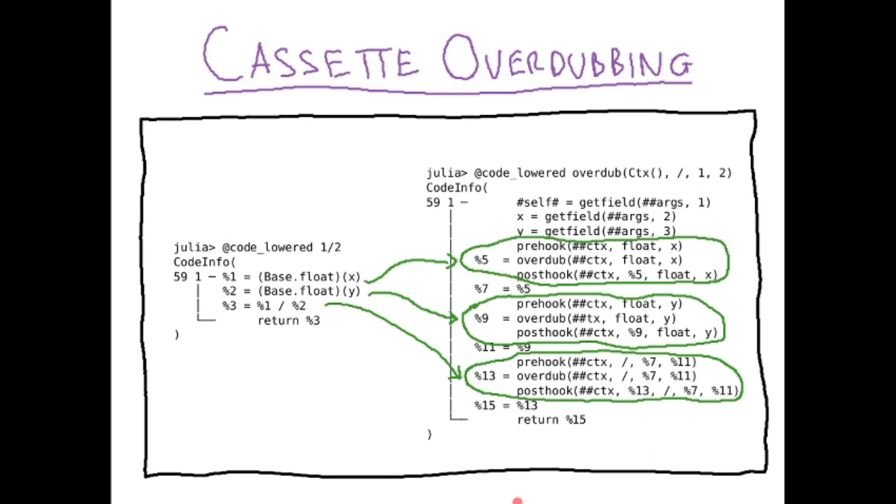transformation that has already been implemented for you, and this is called overdubbing. Basically, with overdubbing, you can overload what it means to call a function in Julia. So every single function call within the IR gets replaced by these overdubbing blocks shown on the right.